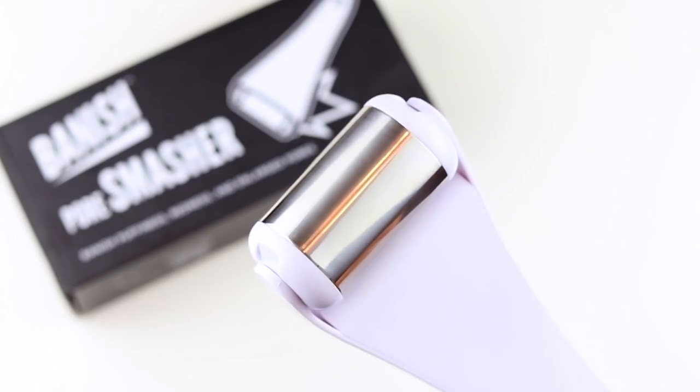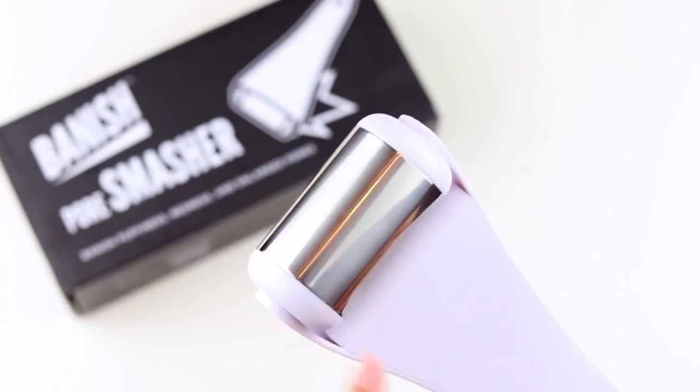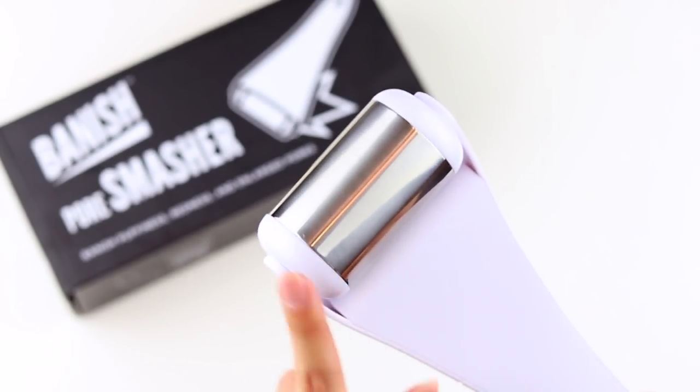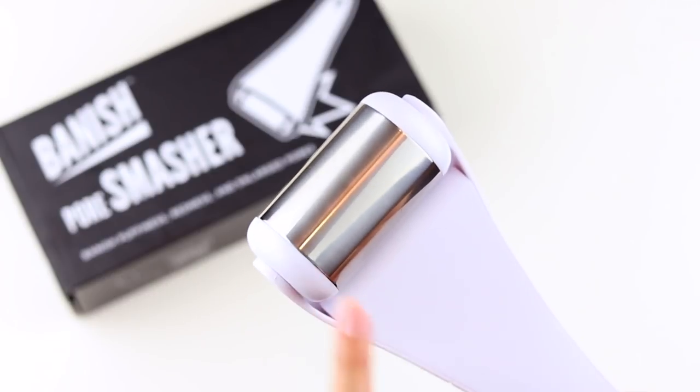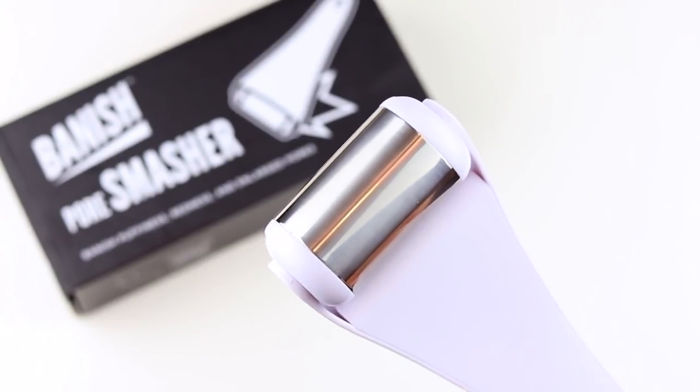But if you do find this unbearable, Banish also sells this tool called the pore smasher. You basically put this in the freezer for about five minutes or so and then roll this across your face before doing one of these sessions. It will help numb the skin so that way it'll be a little bit more tolerable.